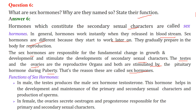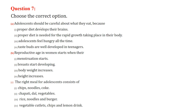Functions of sex hormones: In males, the testes produce the male sex hormone testosterone. This hormone helps in the development and maintenance of primary and secondary sexual characters and also the production of sperm. In females, the ovaries secrete estrogen and progesterone, responsible for the primary and secondary sexual characters.